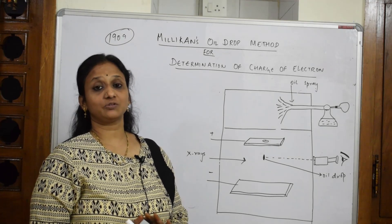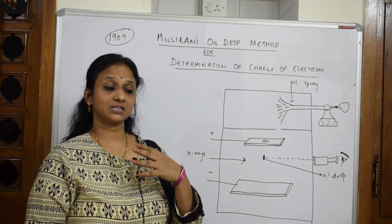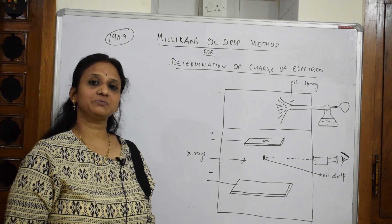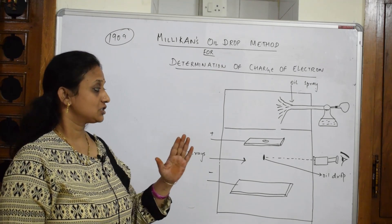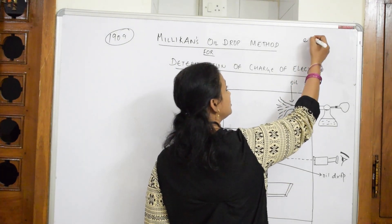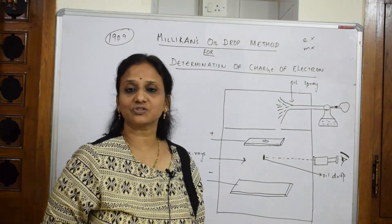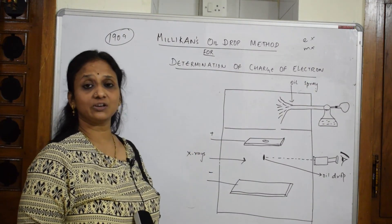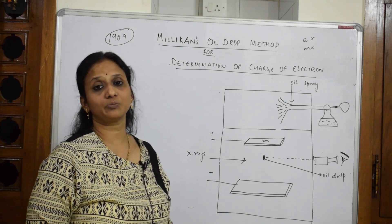Till now, we have studied the E/M ratio. Now let us see the next important concept — Millikan's oil drop experiment, demonstrated by Millikan. This is a very famous experiment. Why is it famous? Because it has given us the value of the charge of an electron. The charge and mass of an electron had not yet been calculated. Then, in 1909, Millikan discovered the value of charge of an electron through the experiment called Millikan's oil drop experiment.